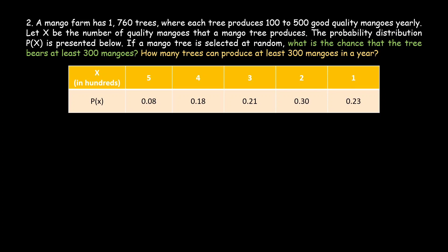We have two questions. First: what is the chance that a tree bears at least 300 mangoes? Second: how many trees can produce at least 300 mangoes in a year? For the first question, since it says at least 300, that means at least 3 in our hundreds notation. So we need P(X ≥ 3), which covers x equals 3, 4, and 5.